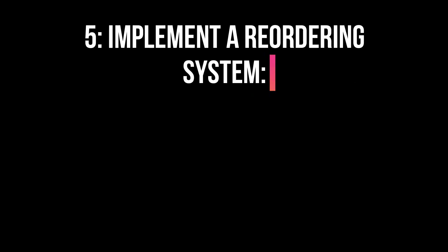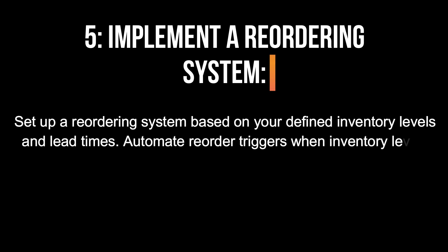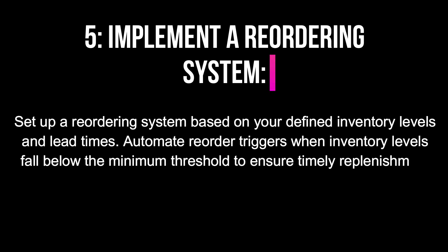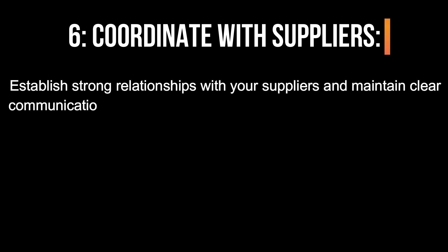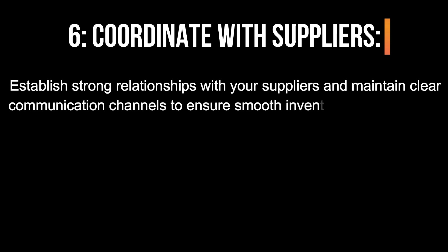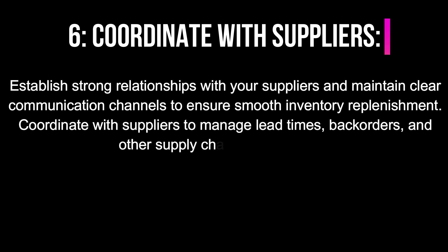5. Implement a reordering system. Set up a reordering system based on your defined inventory levels and lead times. Automate reorder triggers when inventory levels fall below the minimum threshold to ensure timely replenishment. 6. Coordinate with suppliers. Establish strong relationships with your suppliers and maintain clear communication channels to ensure smooth inventory replenishment. Coordinate with suppliers to manage lead times, backorders, and other supply chain considerations.